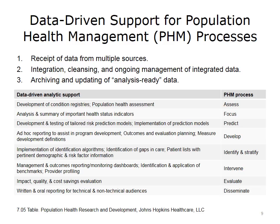The population health process is a very data-driven one. Data are critical for determining interventions and the needs of a population. First, data are collected from multiple sources. That data must then be integrated and cleansed, with an ongoing management strategy for integration of further data on a monthly or daily basis. Once data have been archived and updated, forming an analysis-ready data set, the population health processes can begin — starting with a population health assessment and the development of condition registries, which may include conditions indicating chronic illness, risk of falls, special health needs, or functional limitations affecting activities of daily living.